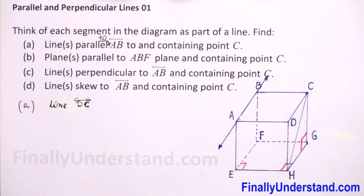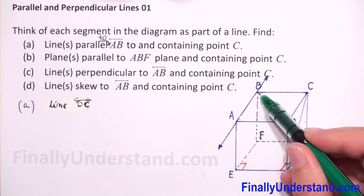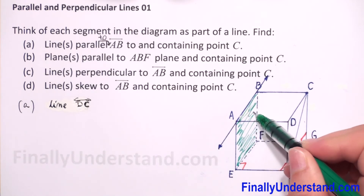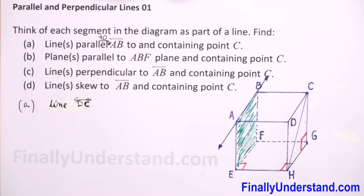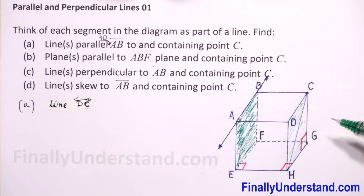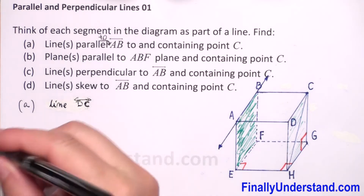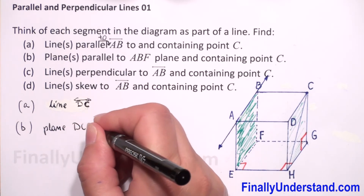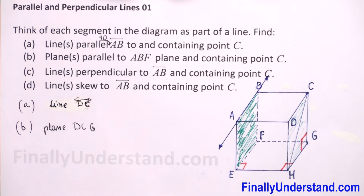Next we have to find a plane parallel to plane ABF and containing point C. Plane ABF is shaded on the diagram. The parallel plane to ABF is plane DCG, and this plane contains point C. So the solution to question B is plane DCG, which can also be written as CDH — the letter order for naming the plane doesn't matter.